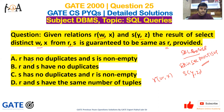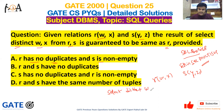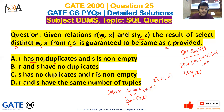Let's go with Option A: R has no duplicates and S is non-empty. If R has no duplicates, then looking at our query — SELECT DISTINCT W, X FROM R, S — the DISTINCT keyword will eliminate duplicate rows from the result. It will remove all duplicate entries.